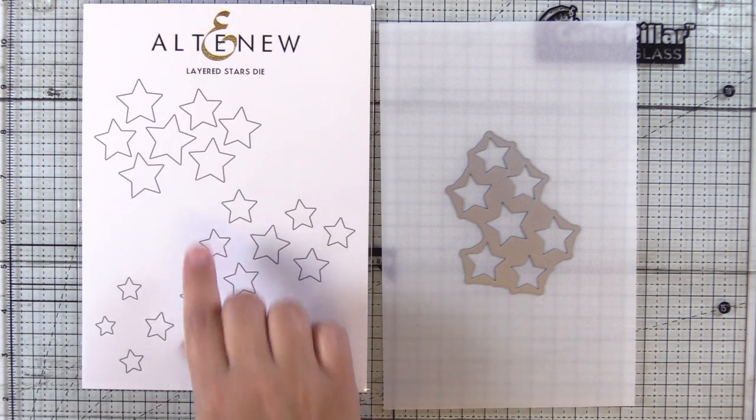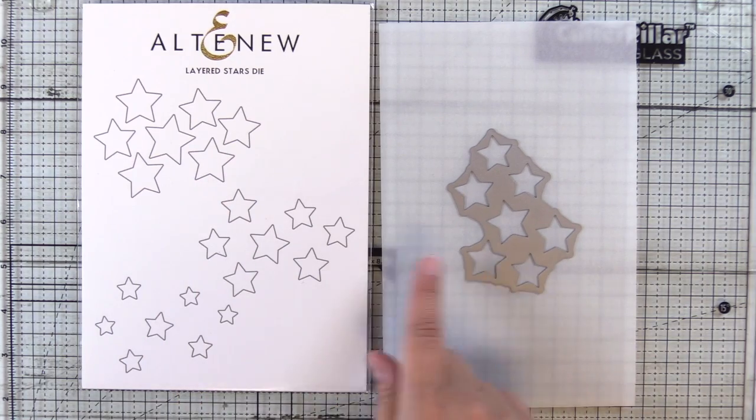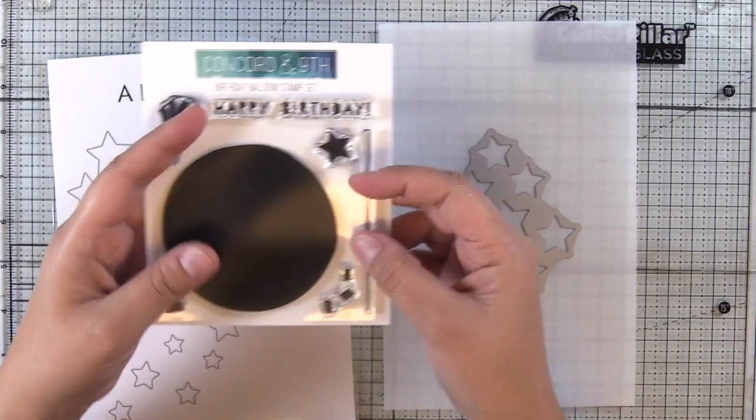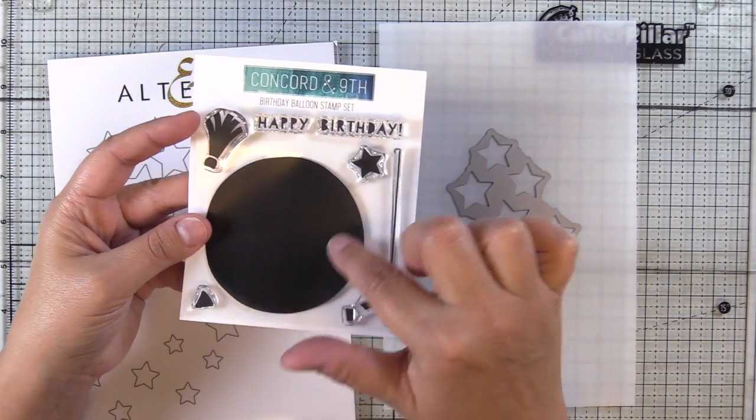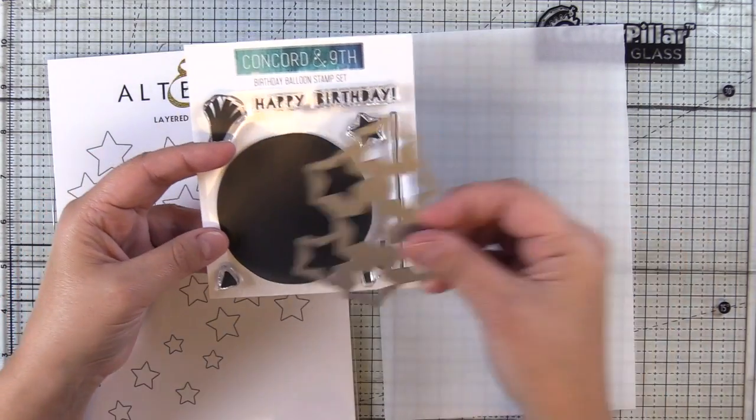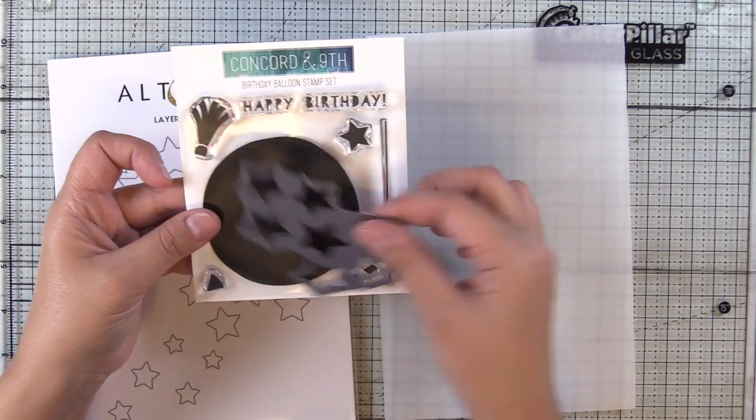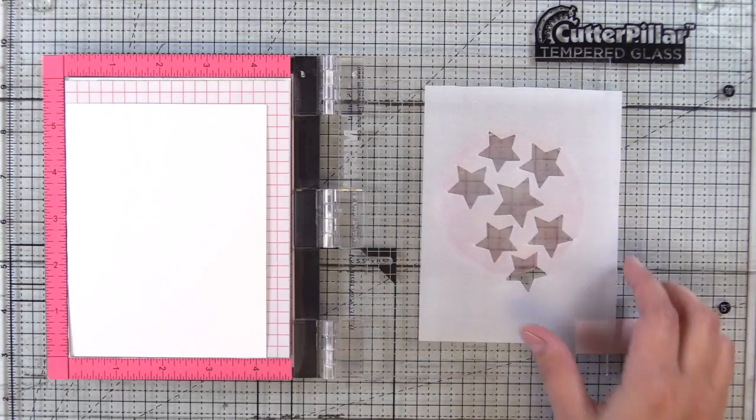First we're going to create a DIY stencil with a piece of vellum and a die. Cover dies are great for this. I'm going to use these stars because they'll go great with this balloon. You want to make sure that you have a solid stamp and that your die is larger than your stamp.